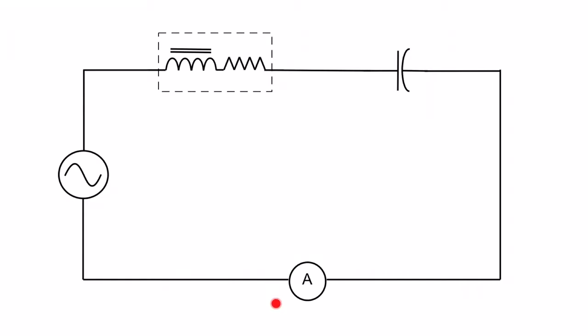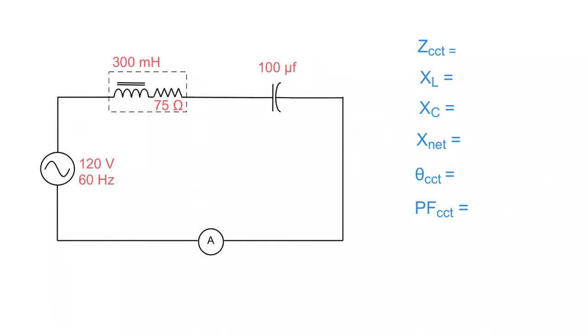We've also got this little ammeter down here. We'll talk about that later. Now I've assigned some values: this inductor has an inductance of 300 mH and a coil resistance of 75 ohms, and this capacitor is 100 microfarads. We're going to see what happens, step-by-step process through this and what happens to the current.